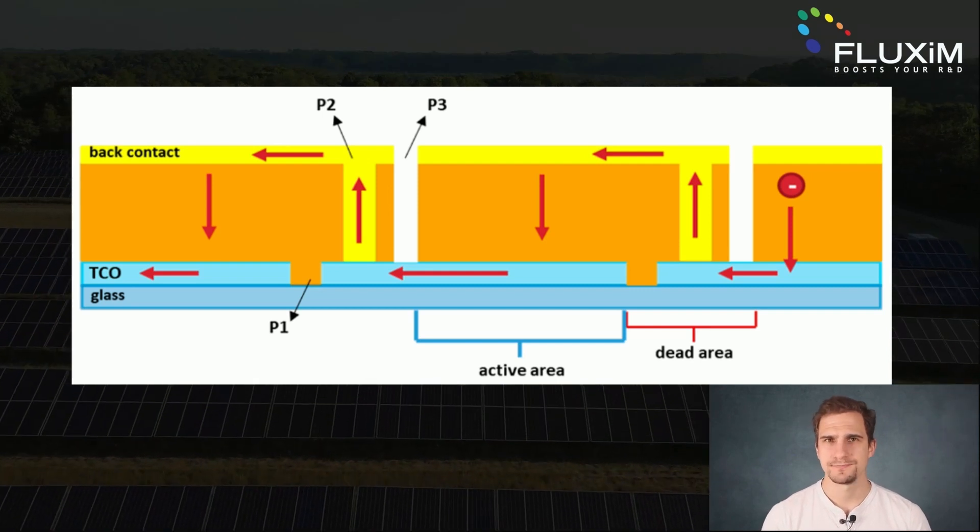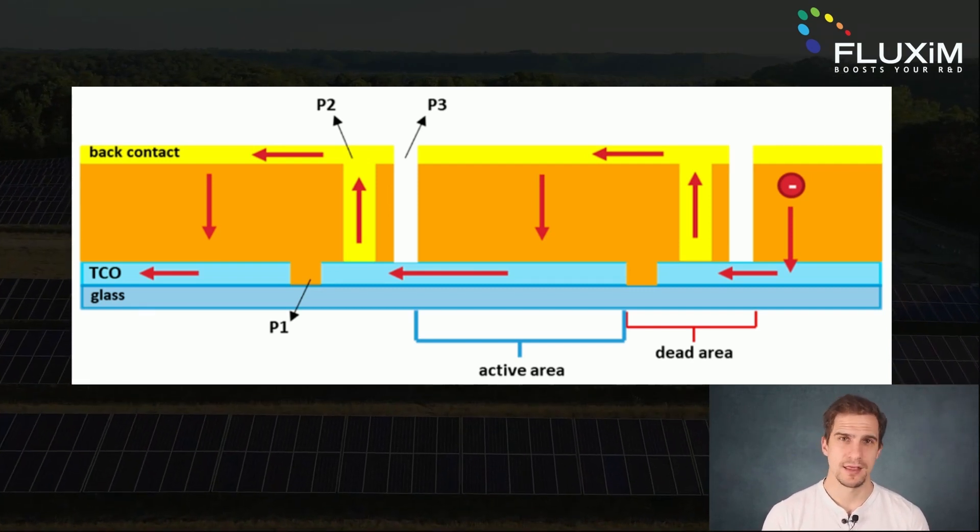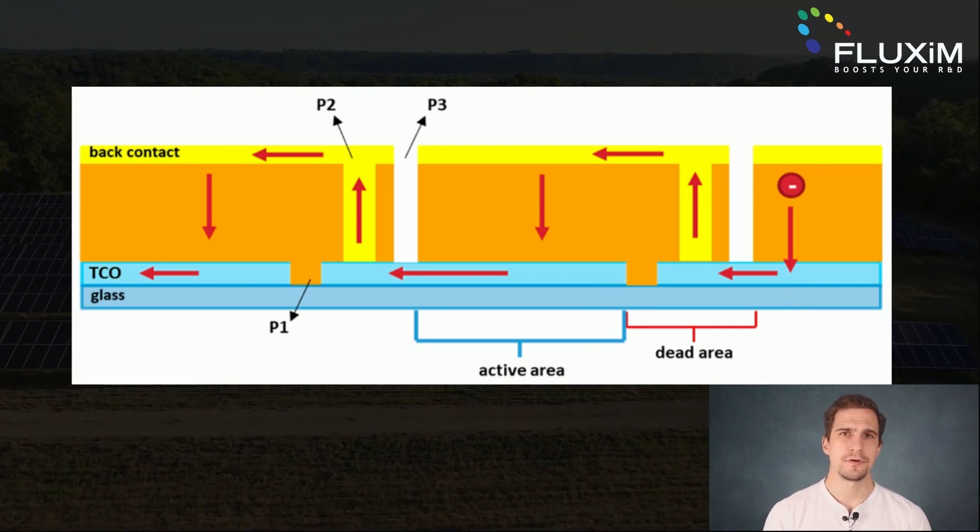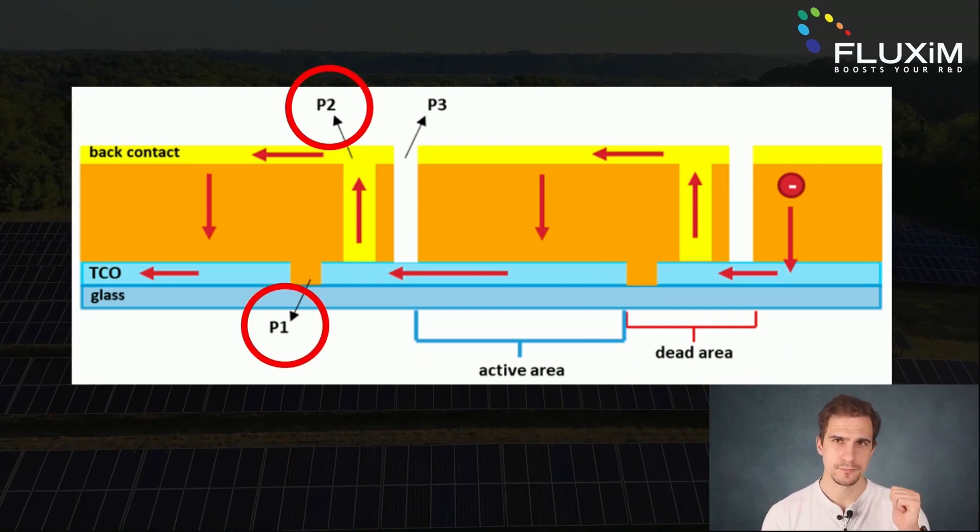But as always, there's a catch. The interconnection gap is a dead area, which reduces the total active area. The interconnection is a combination of three scribing lines, P1, P2, and P3.